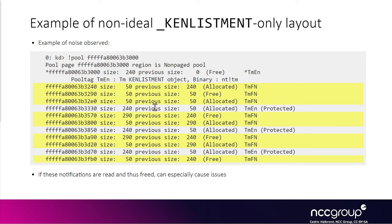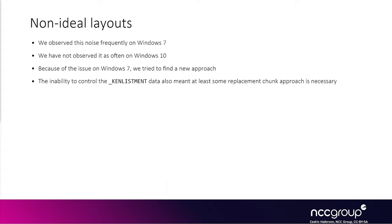The k-enlistments for transaction A are present, but the previous holes have been replaced with tmfn chunks and also leaving some free chunks. Interestingly, when we initially exploited this bug we were working on Windows 7, and the weird layouts were much more noticeable there than on Windows 10. When we noticed the problem on Windows 7 we decided it wasn't worth pursuing that approach. This theory was good for creating holes using k-enlistments, but not for replacing the freed k-enlistment used to exploit the bug.